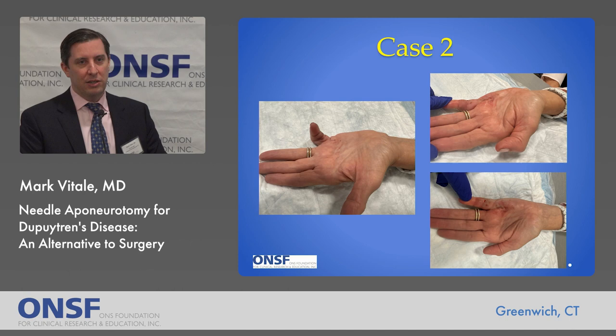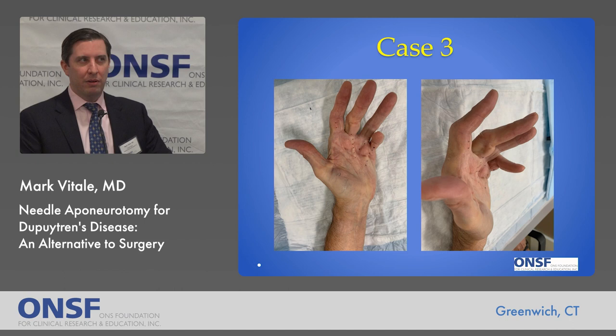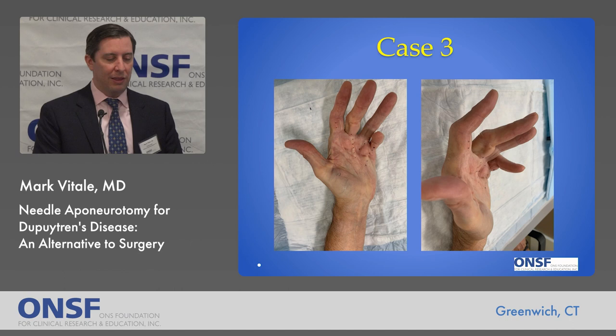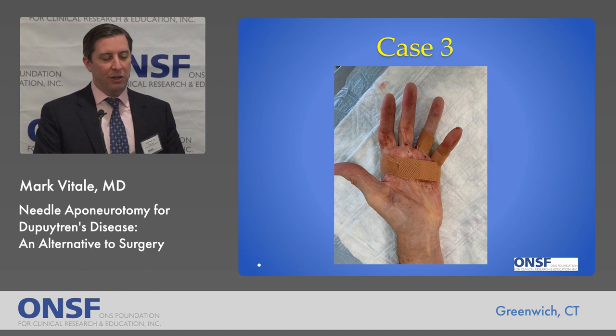Here's another patient with a PIP joint contracture close to 90 degrees who achieved a nice result getting within about 10 degrees of full PIP joint extension just minutes after the procedure. This was another patient I recently treated — a patient with multiple medical problems including poorly controlled type 2 diabetes who wasn't a good surgical candidate. He had multiple fairly severe contractures, and just a few minutes later we achieved fairly good correction, avoiding surgery and scars, though not complete correction.